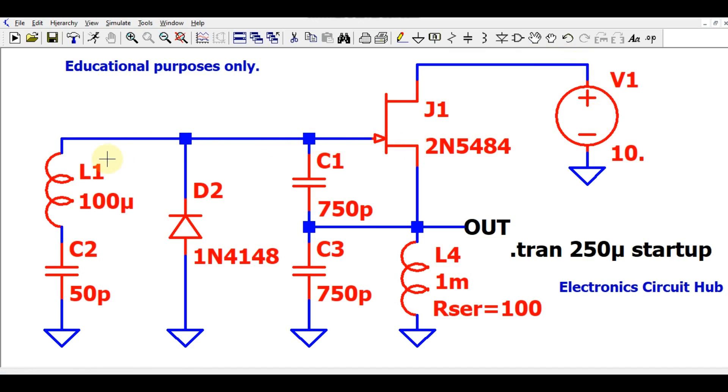At the other end of the JFET you can see L1, C2—that is one inductor, one capacitor, one diode 1N4148—then you can see here this is the combination of C1, C2, and L4.